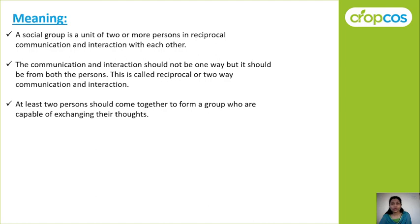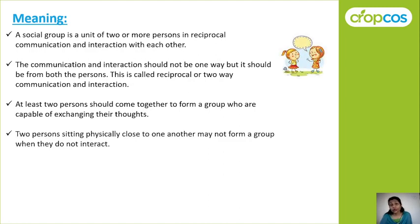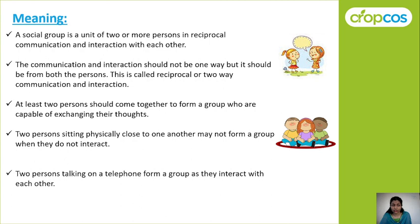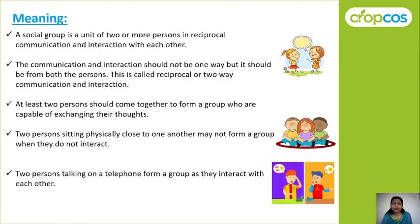At least two persons must come together to form a group, and they should exchange their thoughts. Two persons sitting close to one another may not form a group if they do not interact — if they are not communicating or exchanging thoughts, we cannot say a group has formed. However, two people talking on a telephone do form a group, as they are interacting with each other even though not physically together.